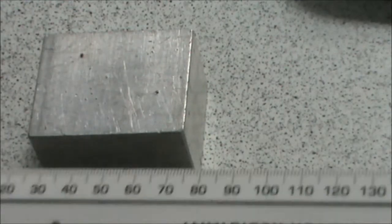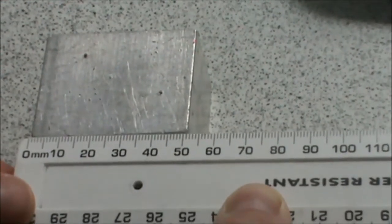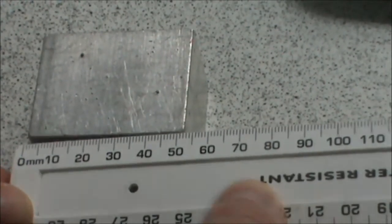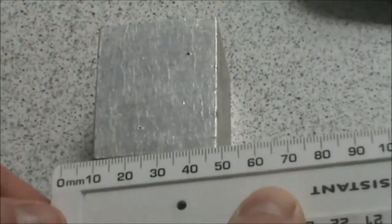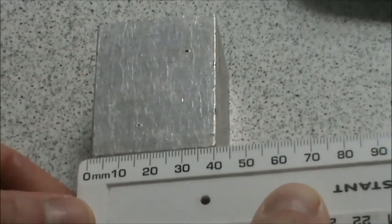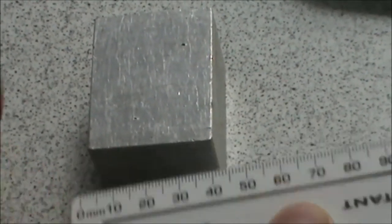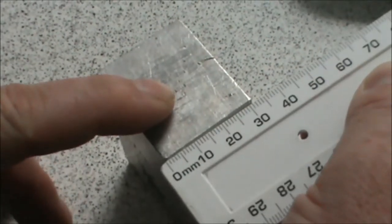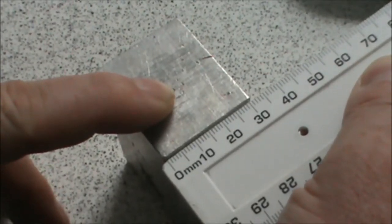For our first block, we're going to measure the length, which in this case is five centimeters, the width, which is four centimeters, and the height of the object, which is three centimeters.